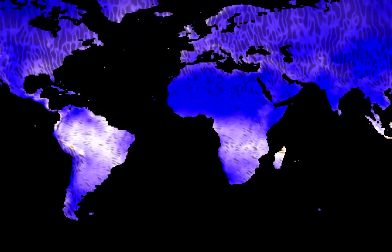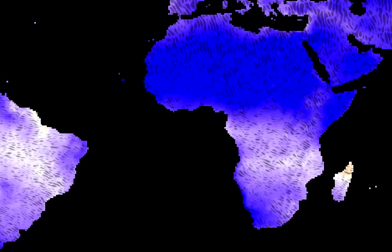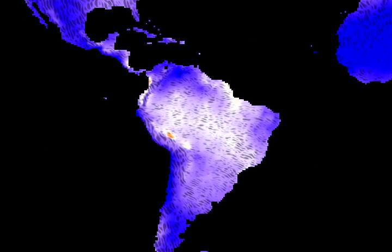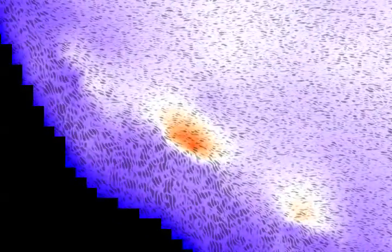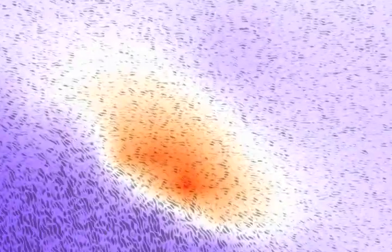This example shows the application of our method to climatology data, which we have used in our user study. Here, precipitation is color-coded, temperature is depicted with texture frequency, and the amount of water vapor is encoded in texture orientation.